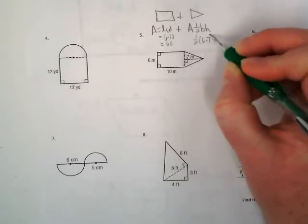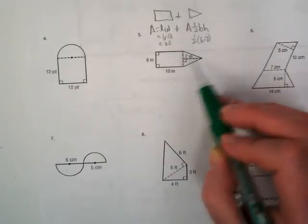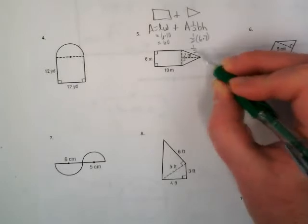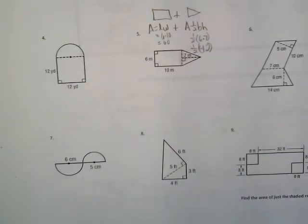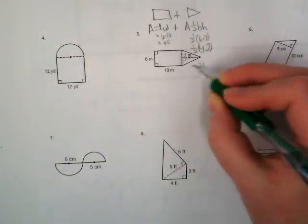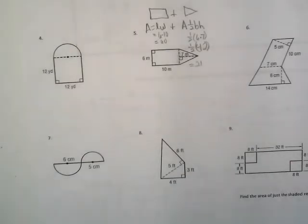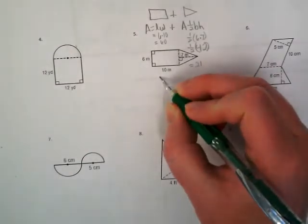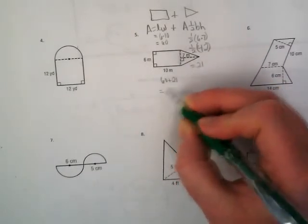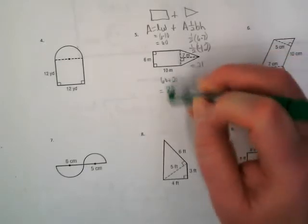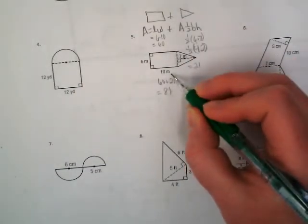Then we have to find the triangle. The base is 6, from the matching side on this rectangle. The height is 7. This one is one-half times 6 times 7. What is 6 times 7? Forty-two. So one-half of 42 is 21. I've got 60 plus 21 equals 81 meters squared.